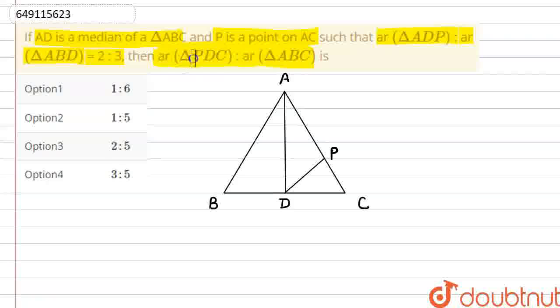So, we need to look at these two triangles, and this is our diagram. AD is our median.